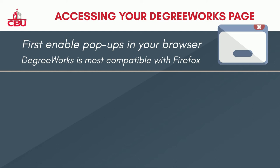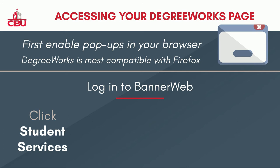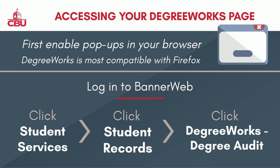To access your DegreeWorks page, log into Bannerweb and click on the Student Services tab. Click Student Records, then click DegreeWorks Degree Audit.